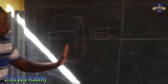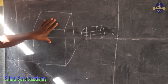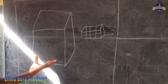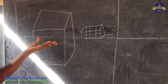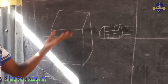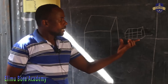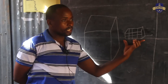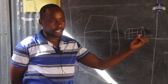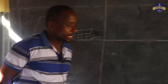So, when you look at these two — when you look at this one, this one is a cube. When you look at these sides, they seem to be equal. So, in a cube, all sides are equal. But in a cuboid, you find that one side is longer than the other one. Is that okay?